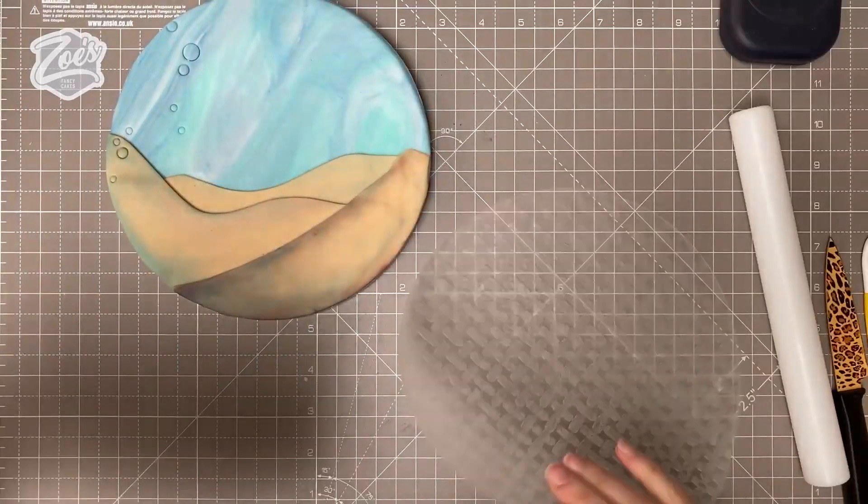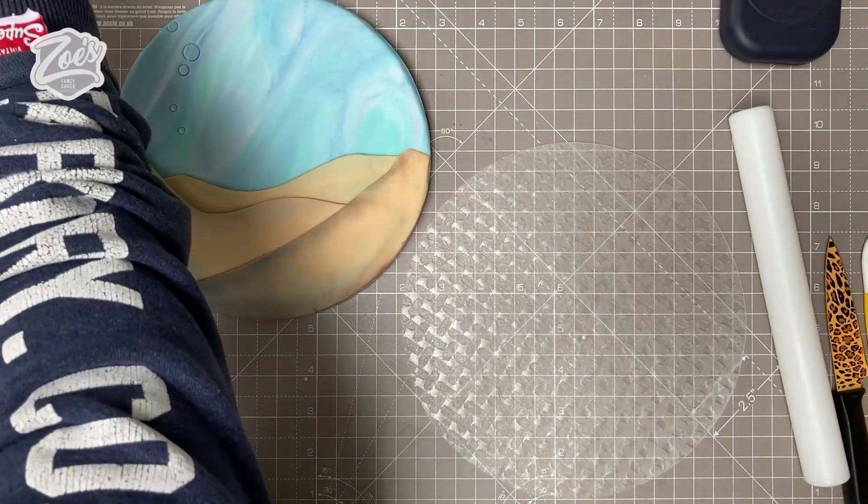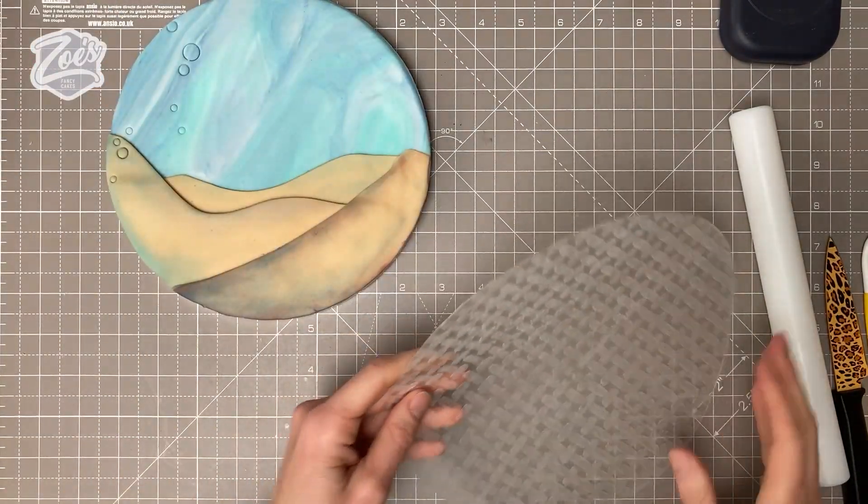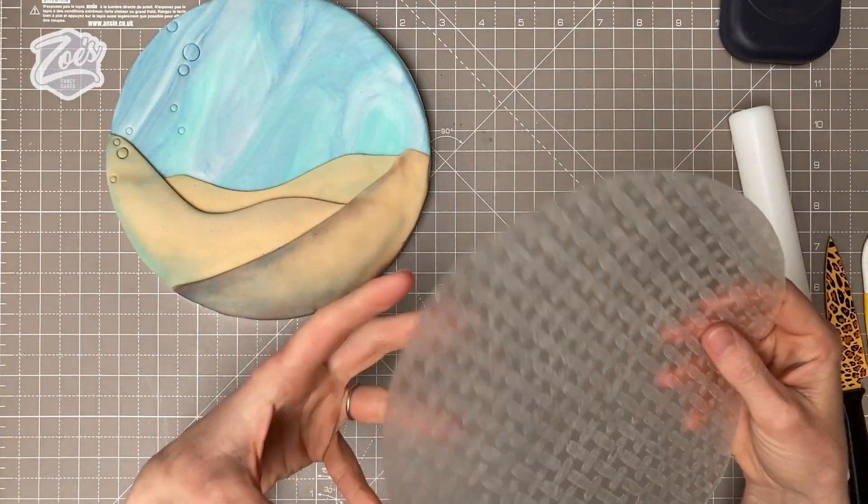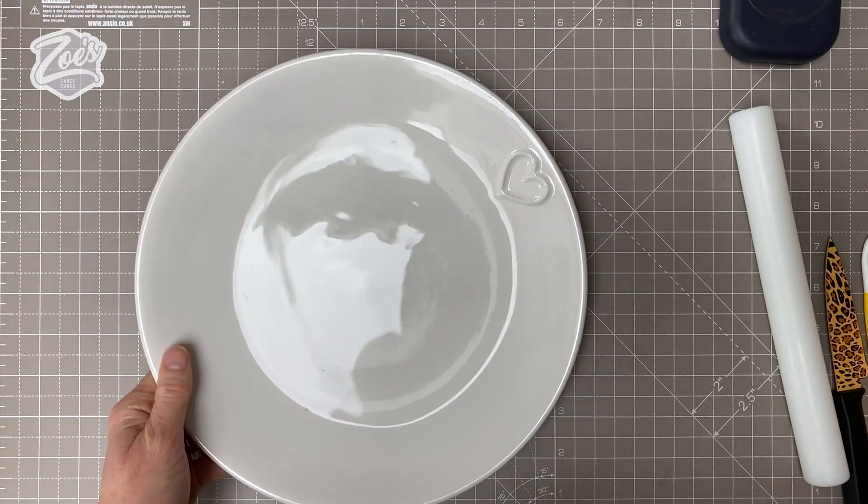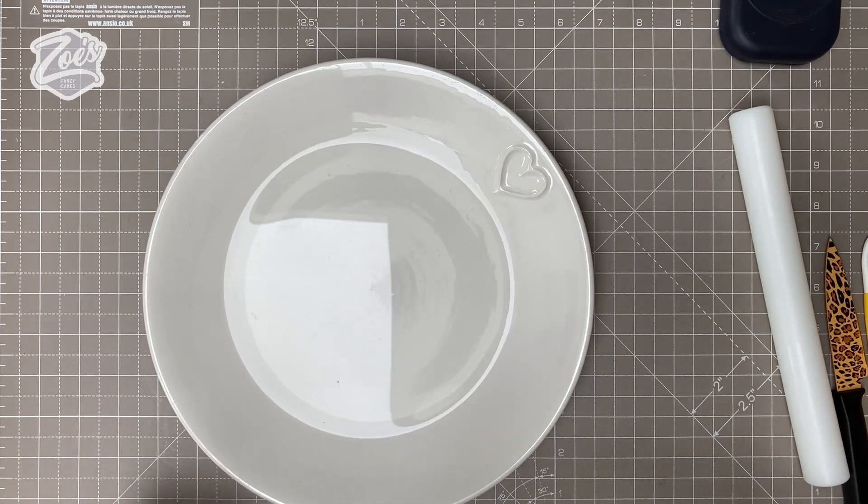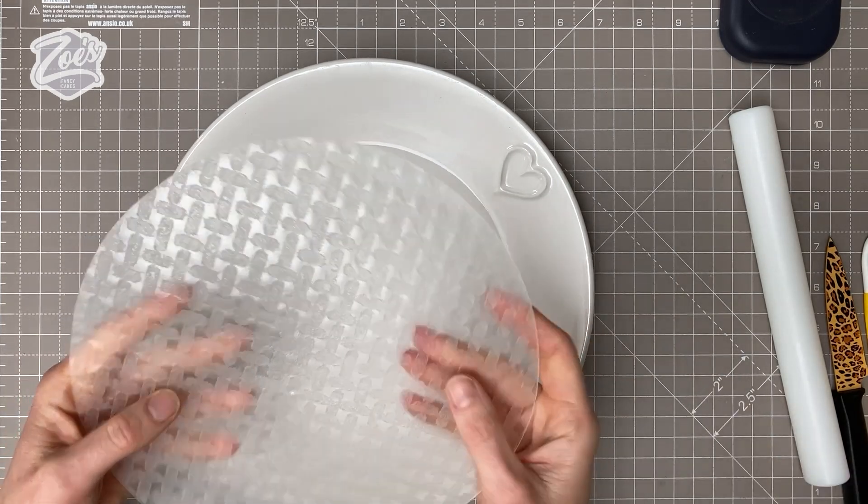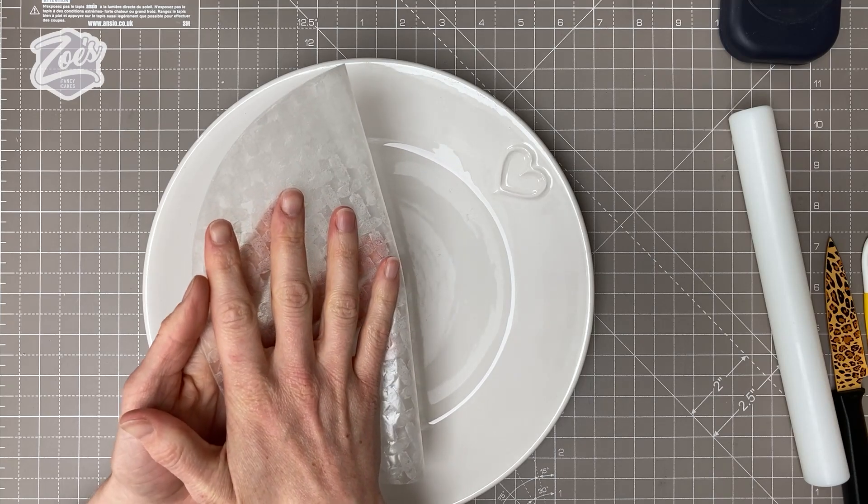We're going to use some Vietnamese rice paper to try and make the ends of the mermaid tail. It's pretty rigid at first, so we need to wet it and soak it to make the tail. It becomes flexible. Just have a plate or dish of water. I'm going to make it a bit smaller, so I'm going to snap it in half first.